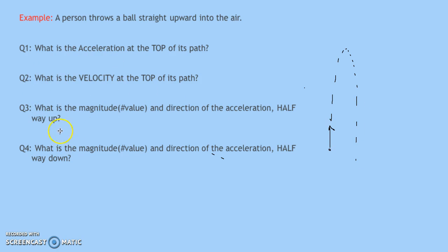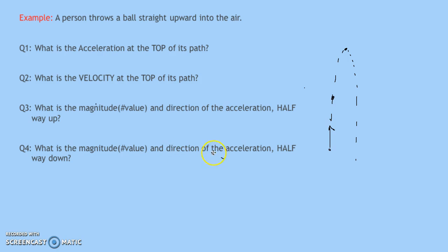These questions are about that scenario. Question one asks: what's the acceleration at the top of the path? Question two: what is the velocity at the top — how fast is the ball moving at that highest point? Question three: what is the magnitude and direction of the acceleration halfway up? And part four: what is the magnitude and direction of the acceleration as it's coming back down?